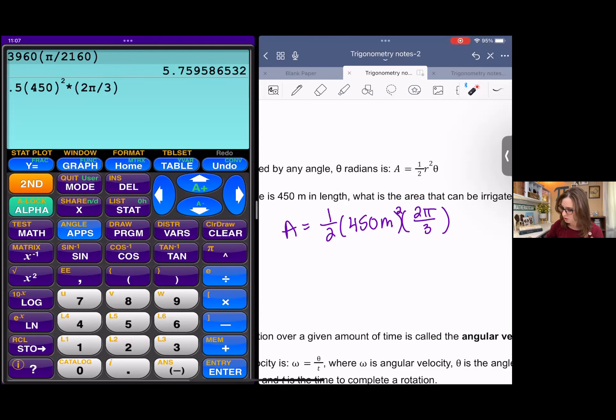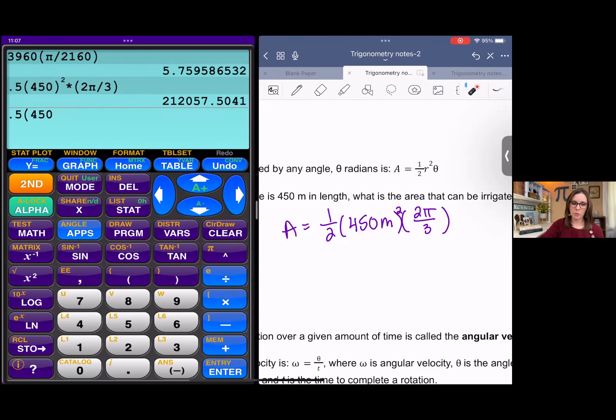We got a half times 450 squared times 2 pi over 3. I wondered if the parentheses matter there. They do not. I'm just super paranoid about parentheses. It doesn't matter. So we should get about 212,057.5 meters squared since we're talking about area.